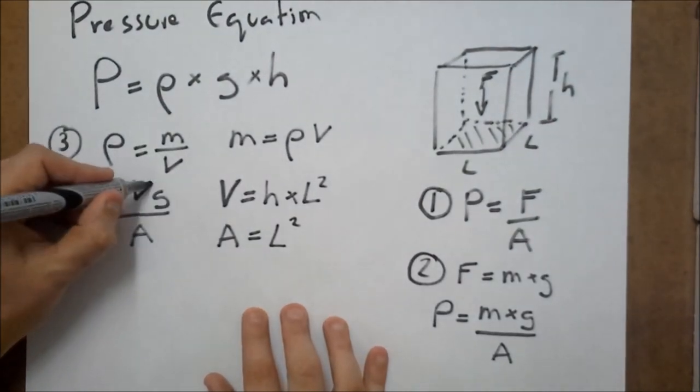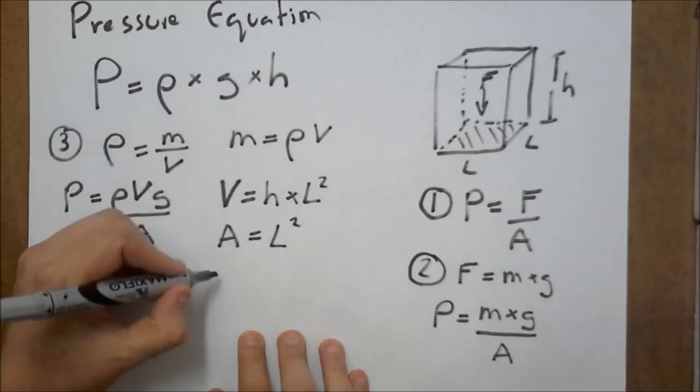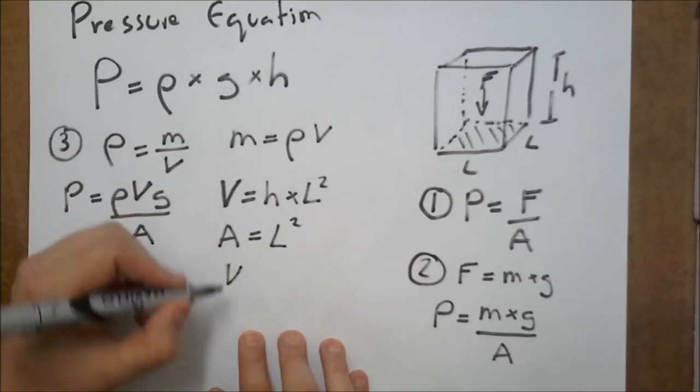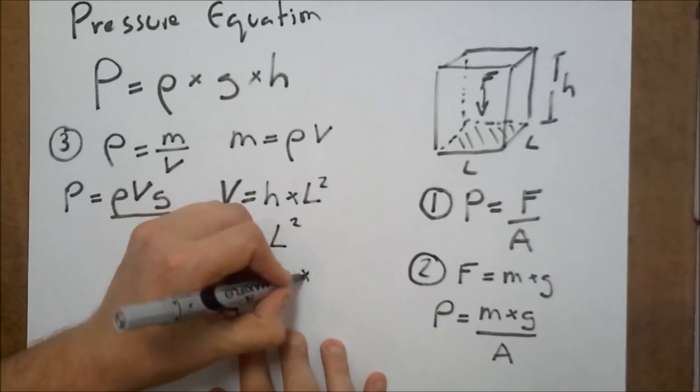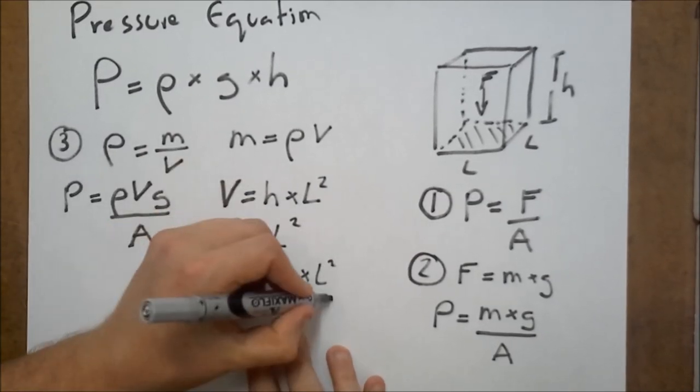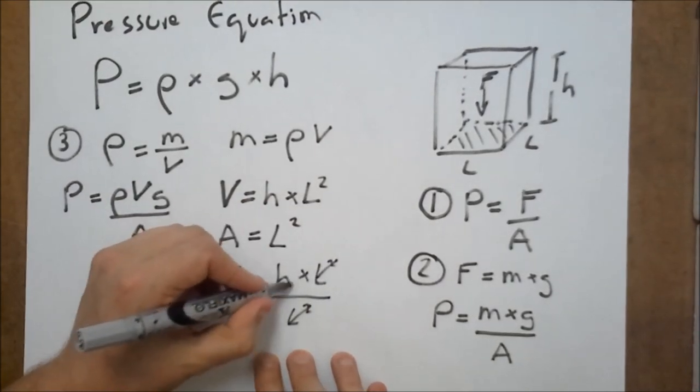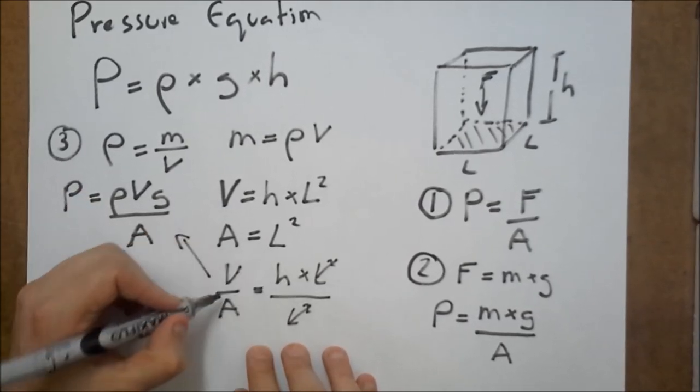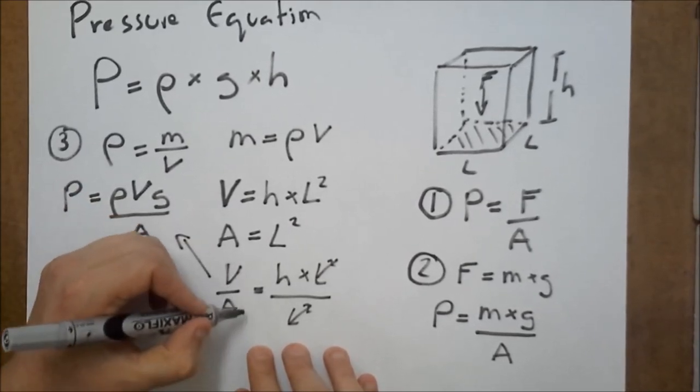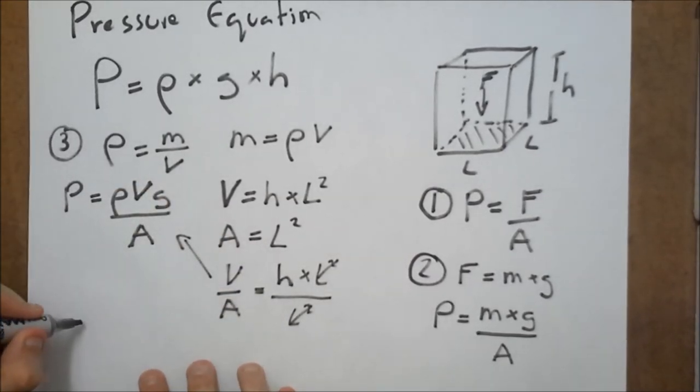Now, here you can see we've got v divided by a. Now, if I just do v divided by a over here, so h times l squared divided by l squared, l squares cancel, that leaves us with h. So, here, what I can do is substitute that in there, that the volume divided by the area is equal to the height of the liquid.